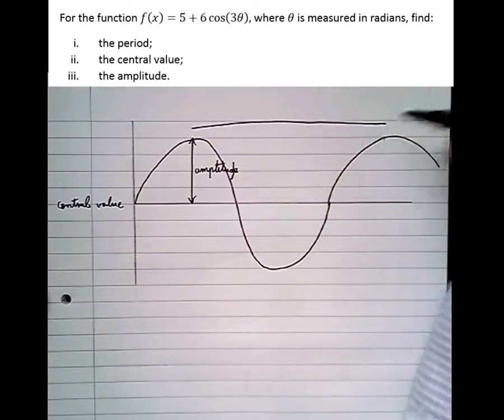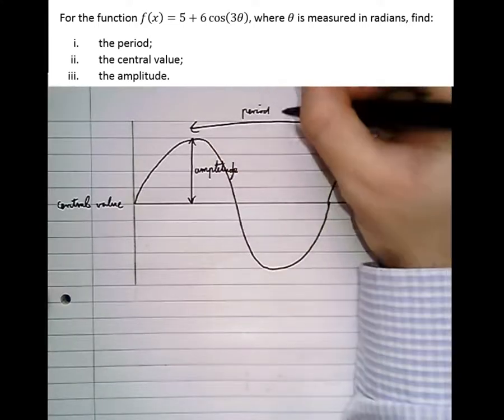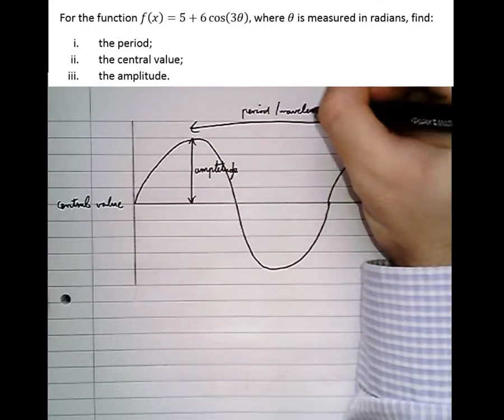And here, from one peak of the graph to another, is called the period. Or in physics, it can be called the wavelength as well.